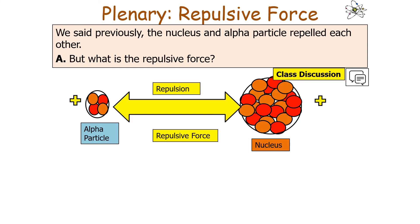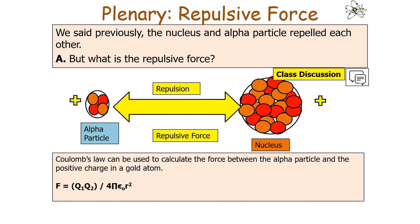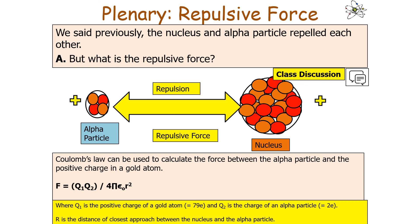The repulsive force between the nucleus and the alpha particle is the electrostatic repulsion — Coulomb's law — because we have two positively charged objects. We can use Coulomb's law to calculate the force between the alpha particle and the positive charge in the gold atom. The repulsive force experienced is equal to Q1·Q2 / (4πε₀r²), where Q1 is the positive charge of the gold atom (79 × 1.6 × 10⁻¹⁹), Q2 is the charge of the alpha particle (2 × 1.6 × 10⁻¹⁹), and r is the distance of closest approach between the nucleus and the alpha particle.